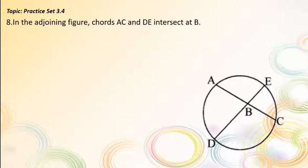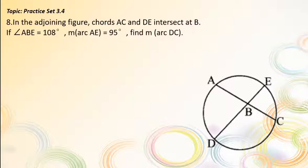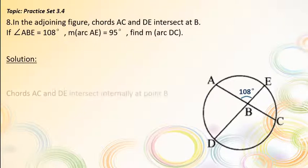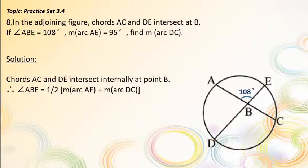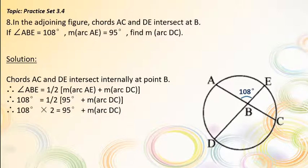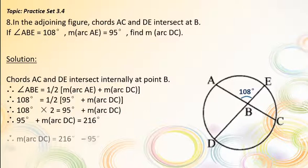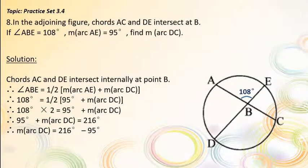Question number 8. In the adjoining figure, chords AC and DE intersect at P inside the circle. If angle ABE = 108° and measure of arc AE = 95°, find measure of arc DC. Solution: Since chords AC and DE intersect inside the circle at point B, angle ABE = half of (measure of arc AE + measure of arc DC). Therefore, 108° = half of (95° + measure of arc DC). So 216° = 95° + measure of arc DC. Therefore, measure of arc DC = 216° − 95° = 121°.